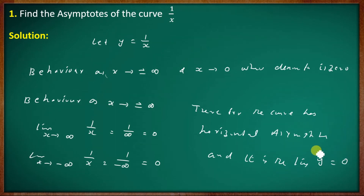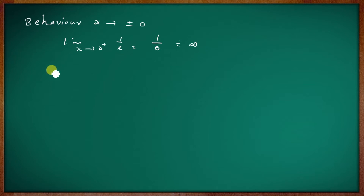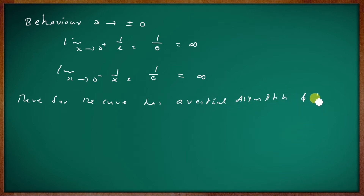For the vertical asymptote, we examine behavior as x tends to plus or minus 0. The limit as x tends to 0 from the right of 1 by x equals 1 by 0 equals infinity. The limit as x tends to 0 from the left of 1 by x equals 1 by 0 equals negative infinity. Therefore, the curve has a vertical asymptote and it is the line x equal to 0.